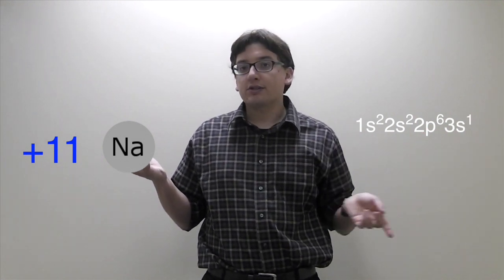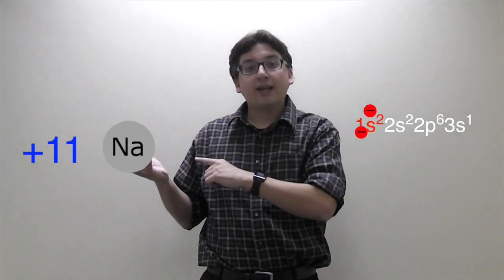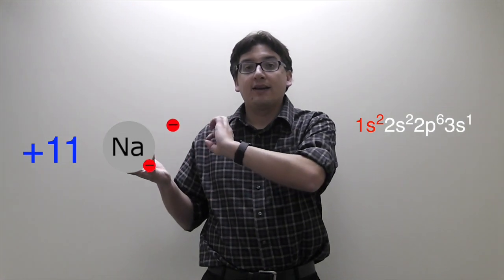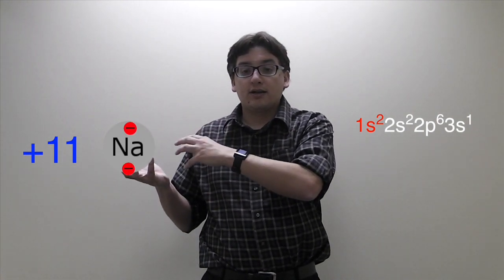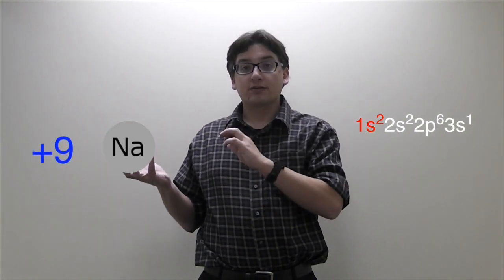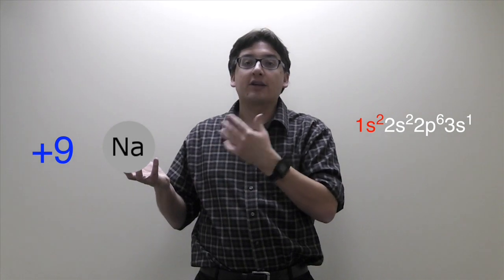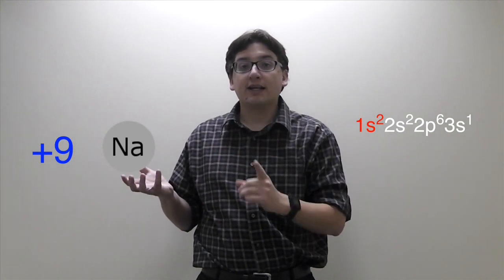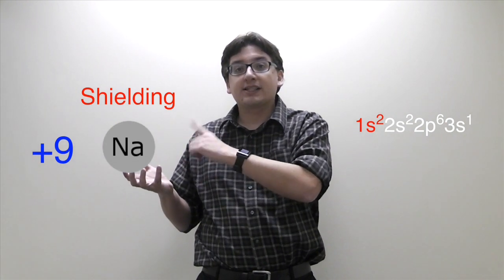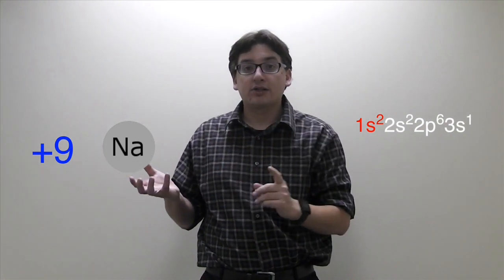That means when I put the first 1s electrons on there, there's two negative charges worth of electrons going around, and so that means there's only +9 protons worth of charge outside, exerting beyond those electrons because the electrons are doing what's called shielding. They're essentially shielding some of that positive charge from reaching outward.